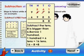Subtract the tens. 8 is bigger than 6. Borrow 100. 100 plus 6 tens is equal to 16 tens. 16 minus 8 is equal to 8.